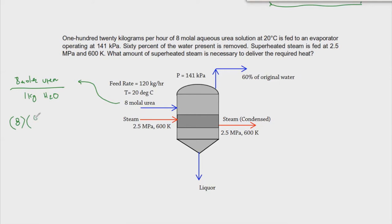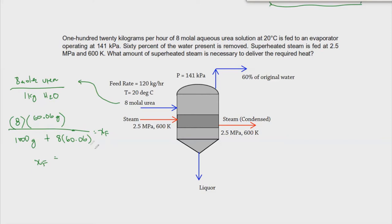To convert to mass fraction: for every 8 moles of urea, there are 60.06 grams per mole, so that is divided by 1000 grams of water plus 8 times 60.06. This gives us x_f equal to 0.0828 — so the mass fraction is approximately 0.08277, and as you can see the feed is quite dilute.